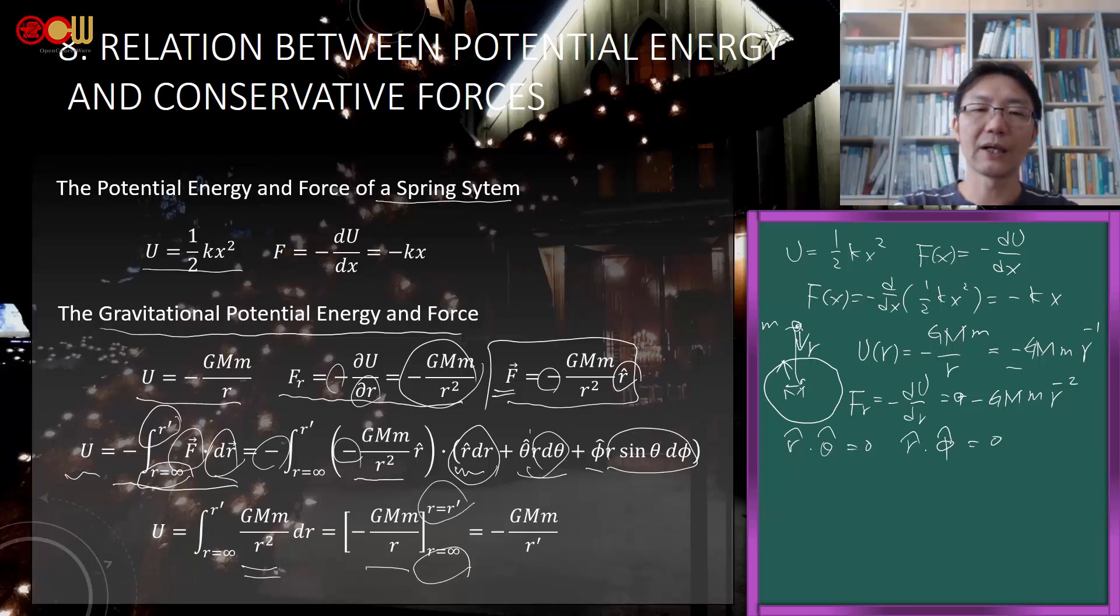Think about it - the derivative of -1/r is exactly 1/r². The key is integrating from infinity to r'. At infinity it's exactly zero, so this becomes adding a negative sign plus zero at infinity, and at r' it's -GMm/r'. So you see how to differentiate potential energy to get force, and how to integrate force back to potential energy. These two can be calculated forward and backward interchangeably.